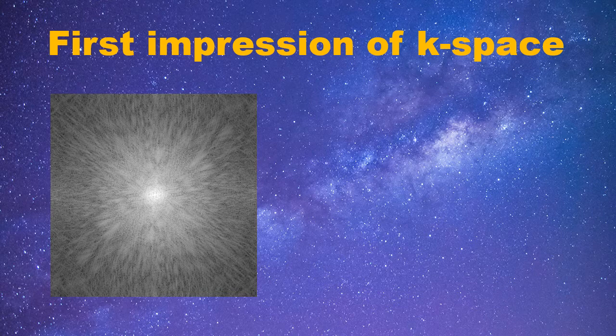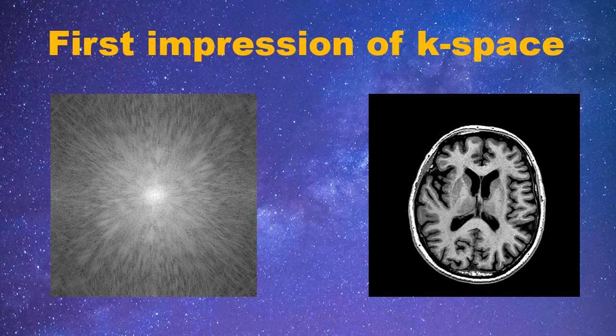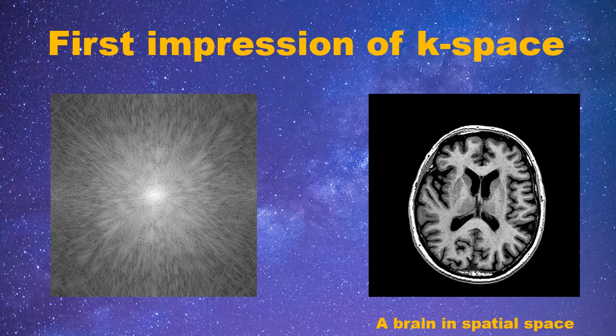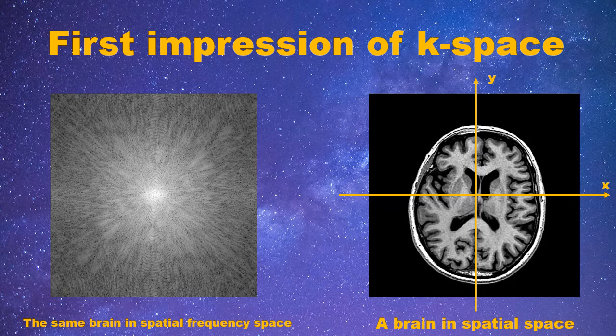Okay, let's look at the second image. I believe this is straightforward for everyone. It's an image of brain, or I can say, this is a brain image in spatial space. We all know that each pixel on this image can be described by spatial location on x and y-axis. Now, if we look back to the first image, let me tell you, it is actually the same brain image, but in the spatial frequency domain. It is also called k-space.